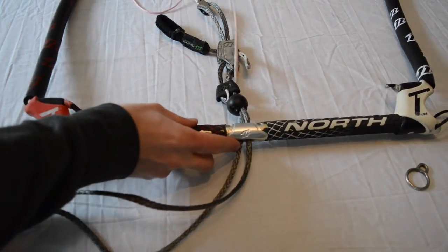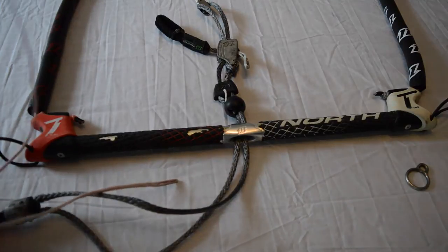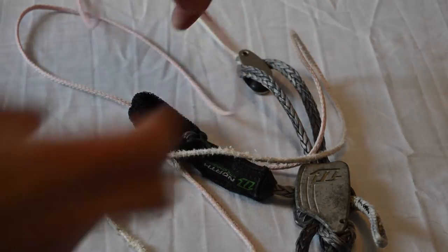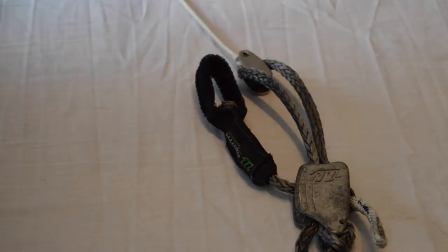Once you have it out of the chicken loop, you can pull it through the center of the bar. And if this line is running through the cleat or the pulley, you can pull it through there.